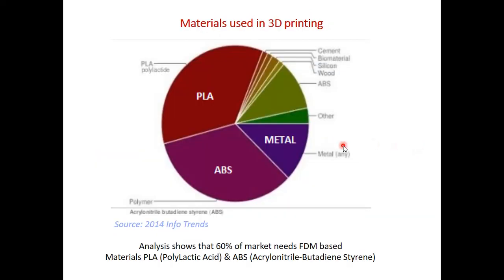From the material point of view, what are the materials used in 3D printing? Currently almost 60–65% of 3D printing uses PLA and ABS, with the corresponding printer being FDM. We are also using metal and there are other applications like silicon, wood, and cement. As the metal part becomes more widely used, it will definitely replace future manufacturing.